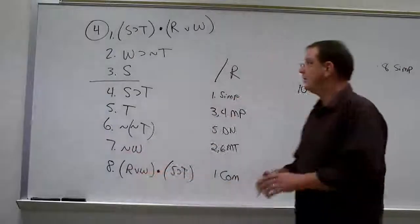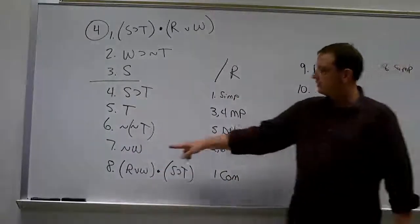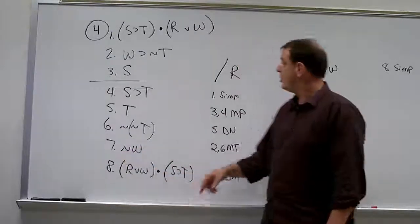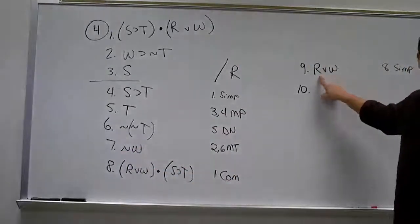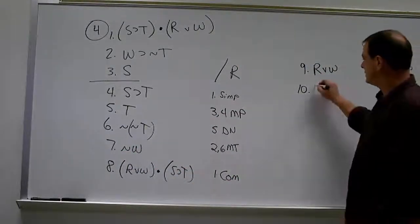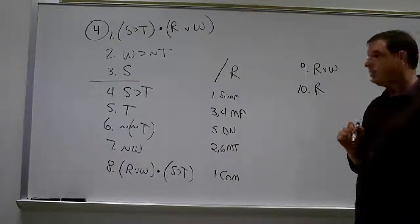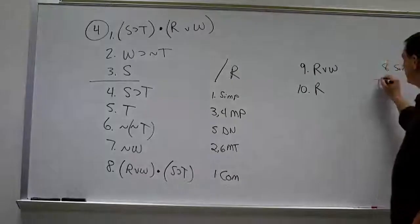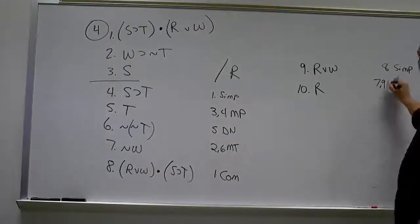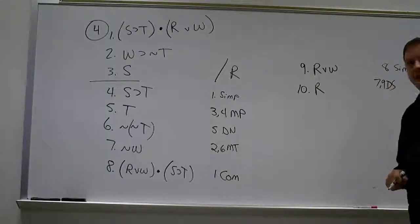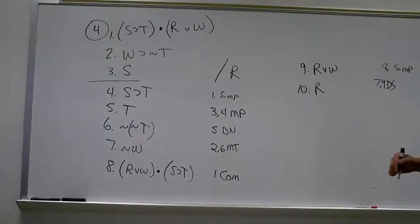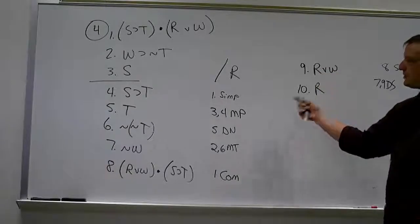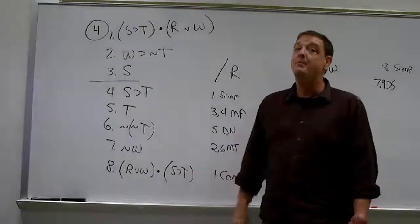Now we have what we need, right? We know R or W. Earlier on, we figured out that W is false. And so if W is false, R is on its left. So I'm going to say line 10 is R. Now, from lines 9 and 7, I'll call it 7 and 9, disjunctive syllogism. Now, for the record, I'm not really sure where Hurley is on this one. So will he make us switch this and put W first because that's what's negated here? Maybe.